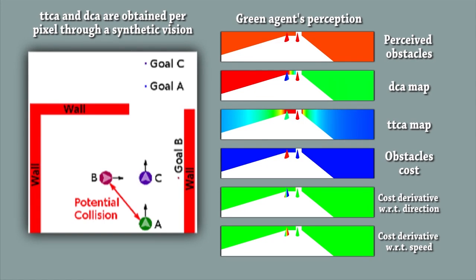In our model, agents are steered according to what they see. Agents are equipped with a synthetic vision mechanism which allows them to perceive the surrounding obstacles. For each pixel, we compute the distance to closest approach and time to closest approach. We define a cost function which allows detecting pixels presenting a risk of collision based on the TTCA and DCA values.